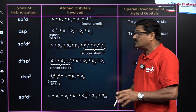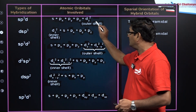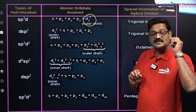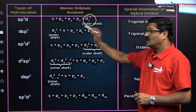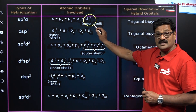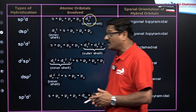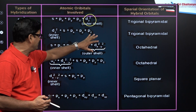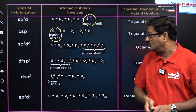This is very important for the NEET examination from the NCERT — which D orbitals are used in a particular hybridization is a most expected question. For SP3D hybridization, the DZ² orbital is used and the geometry is trigonal bipyramidal. DSP3 also uses the DZ² orbital.